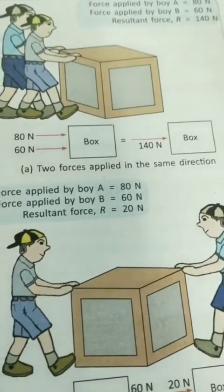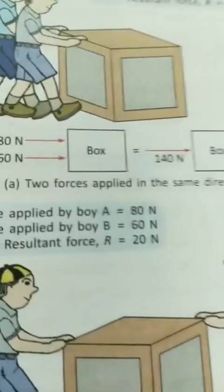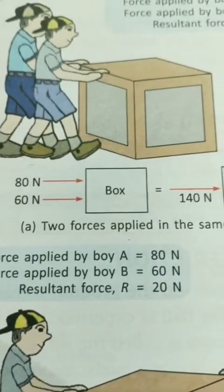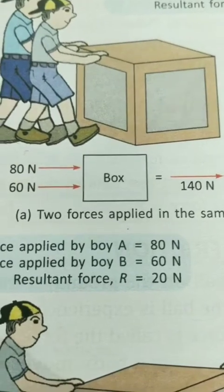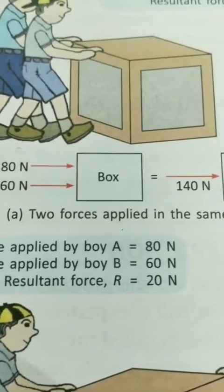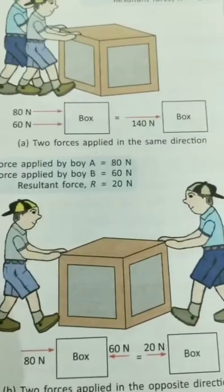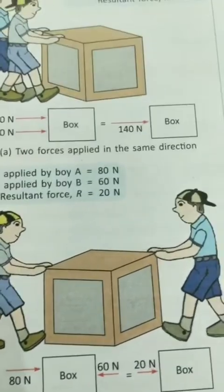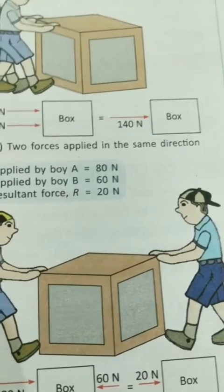In these two cases, the force is applied by two boys acting simultaneously on the box. When force acts on an object in this way, it is called resultant force — also referred to as unbalanced force as written in your book.